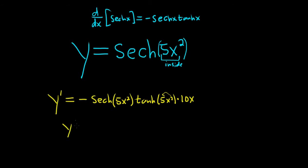The last thing to do is put the 10x in the front. So this is negative 10x hyperbolic secant of 5x squared hyperbolic tangent of 5x squared.